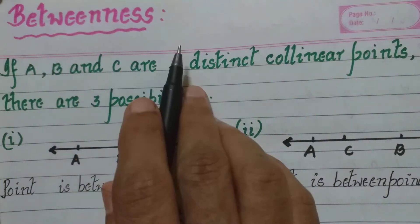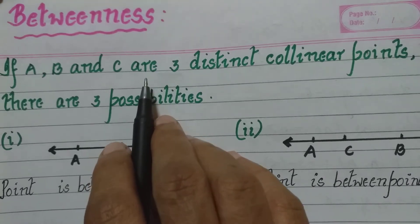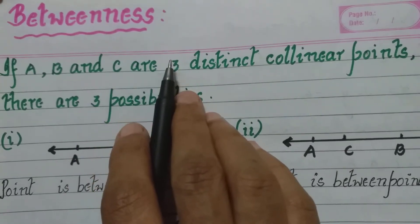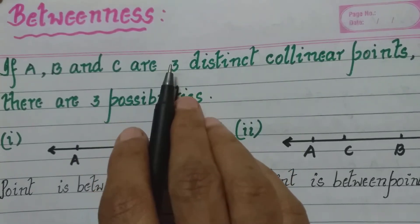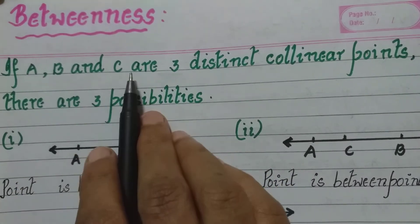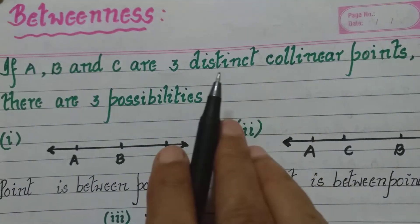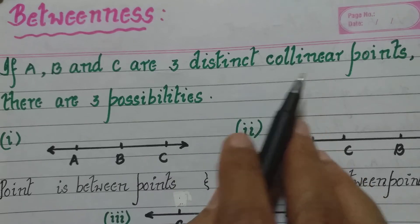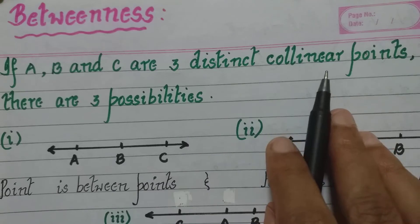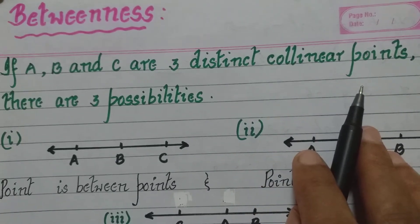We will now learn a new concept called betweenness, which is required to solve the remaining part of practice set 1.1. Betweenness means that one point lies between the other two points. Consider three points A, B, and C which are distinct — meaning they are separate from each other and one does not lie above the other. These are three distinct collinear points, meaning all three lie on the same line.